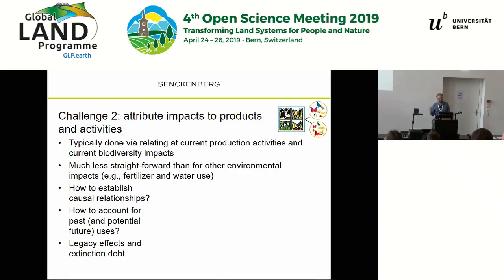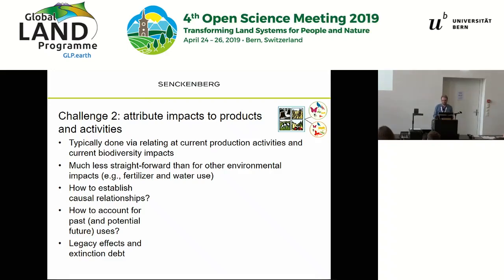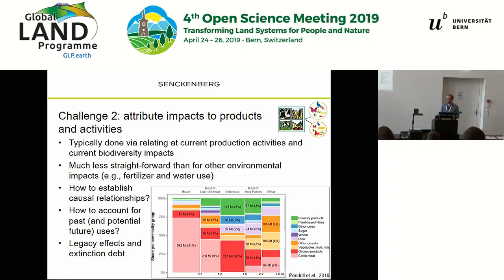We must also account for past uses and legacy effects influencing current patterns, and account for extinction debt — what we do now will lead to extinctions in the future. As an example, not related to biodiversity but to tropical deforestation, work with Martin and Florence Pendrill shows what this kind of attribution could look like: impacts from deforestation attributed to different countries and products.